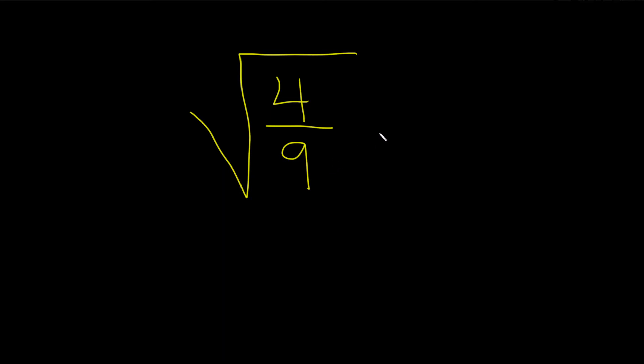So whenever you have to find the square root of a fraction, all you have to do is take the square root of each piece like this. So this is the square root of 4 over and then the square root of 9. You just take the square root of the top and the square root of the bottom.